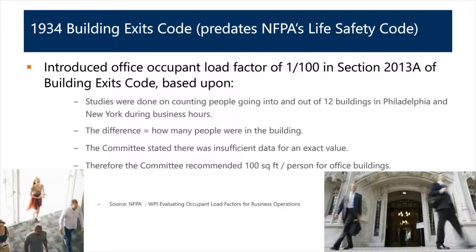The precursor to today's NFPA Life Safety Code was the 1934 Building Exit Code — the first published document identifying a 1-to-100 occupant load factor for office buildings. Researchers counted people entering and exiting 12 buildings in Philadelphia and New York, and the remaining people divided by floor area yielded the 1-to-100 factor. This is the earliest documented source for the 100 square foot per person office occupant load factor.